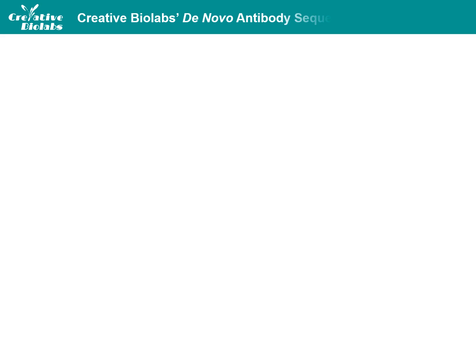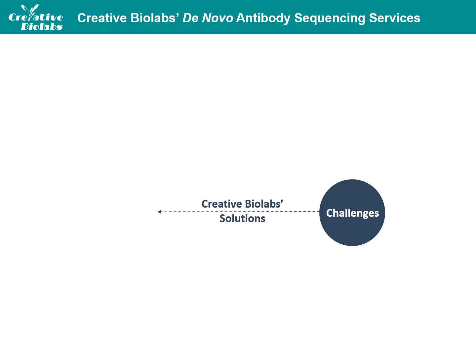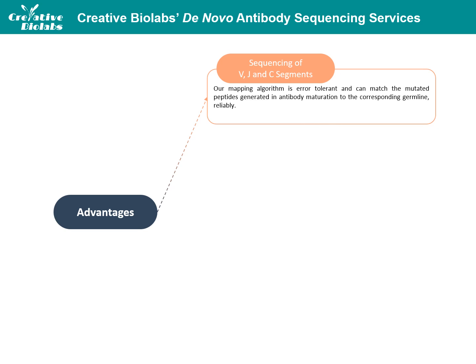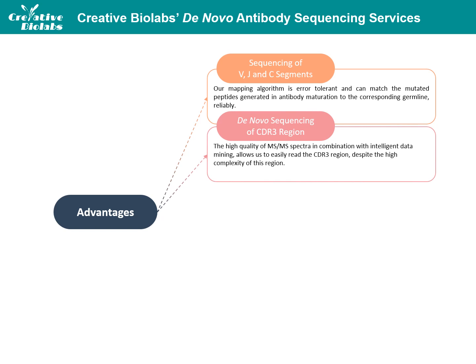To overcome the difficulties and challenges in de novo antibody sequencing, CreativeBioLabs provides efficient solutions, which are our advantages over other providers of this service. For sequencing of V, J, and C segments, our mapping algorithm is error-tolerant and can reliably match mutated peptides to the corresponding germline. Due to the high number of peptides, we get sequence information for every peptide bond in the antibody. Typically, 20 to 70 different mass spectrometry spectra are generated for each amino acid position. Thus, even the hardest sequences of proline- and arginine-rich peptides can be resolved.